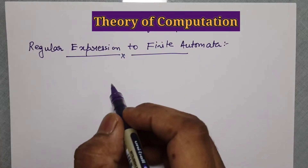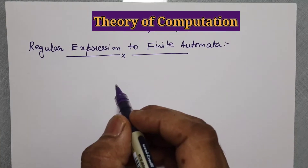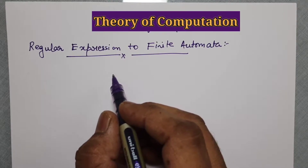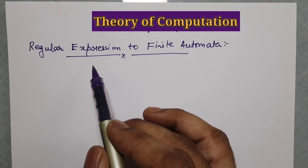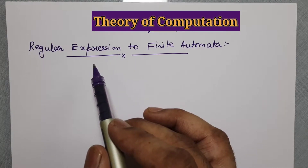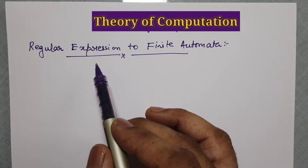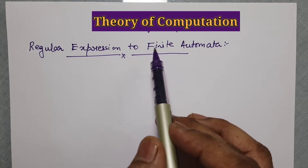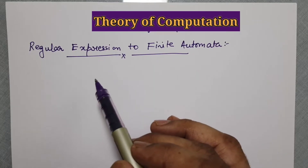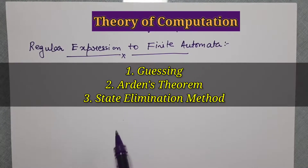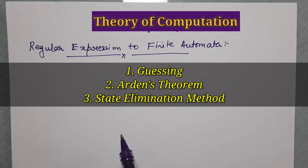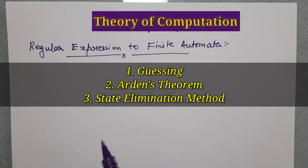Hello, my dear friends, welcome to the Theory of Computation lecture series. In the previous video, we have seen the regular expression — what is a regular expression and how do we write a regular expression for a given language. Then we have seen converting a given finite automata to a regular expression, covering three methods: guessing, Arden's theorem, and the substitution or state elimination method, where we were substituting the states by the transition graph.